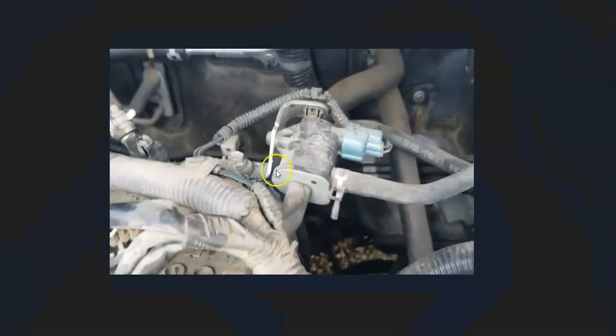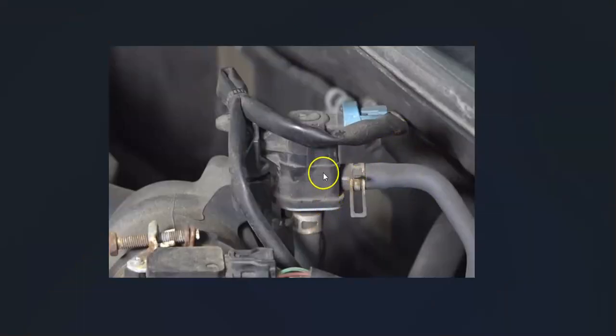If the gas cap looks good, the next thing to check is the purge valve. This is located on top of the engine somewhere with two hoses going to it and a wiring harness. The purge valve opens to let gas vapors go into the engine and get burnt off, then closes when the engine's not running so they don't escape. Locate the purge valve and test it. I made a video on how to test the purge valve - I'll put a link in the description. Make sure the purge valve is working correctly.